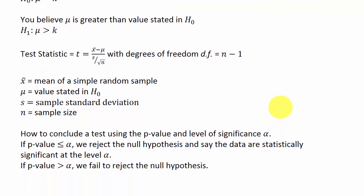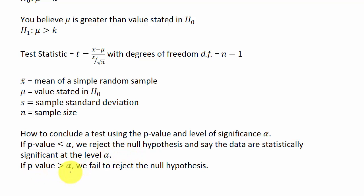To conclude the test using the p-value: if the p-value is less than or equal to alpha — alpha is your level of significance — we reject the null hypothesis and say the data are statistically significant at the level alpha. If the p-value is greater than alpha, we fail to reject the null hypothesis H naught.